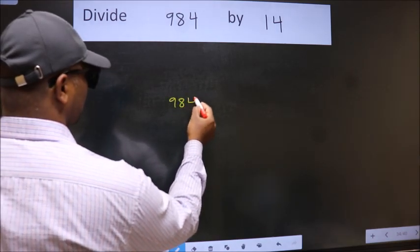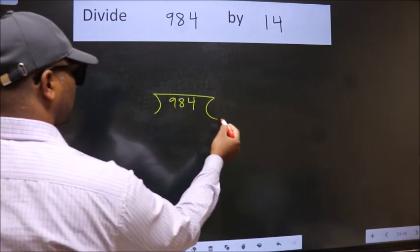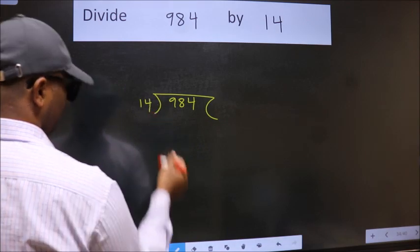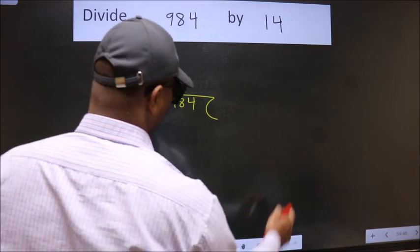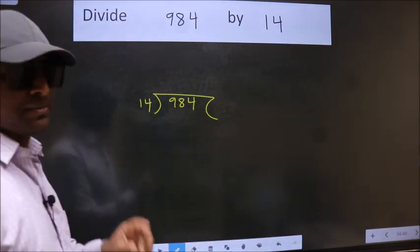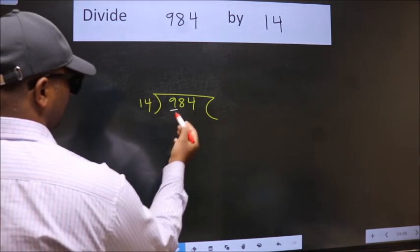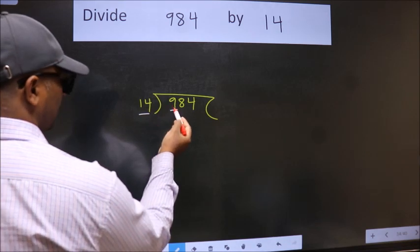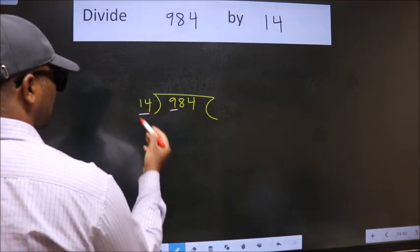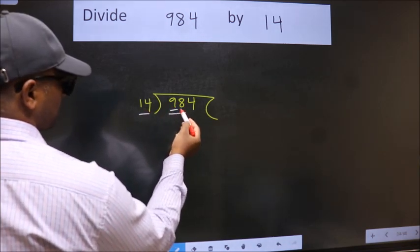984 here, 14 here. This is your step 1. Next, here we have 9. Here 14. 9 is smaller than 14, so we should take two numbers, 98.